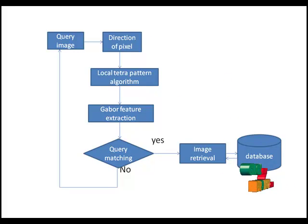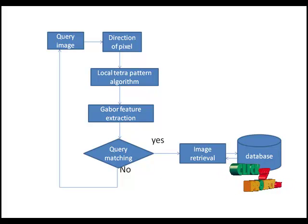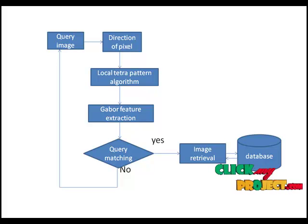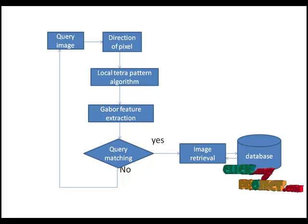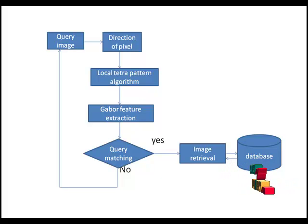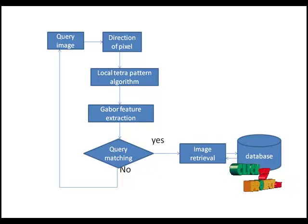This is the flow diagram of our project. In the first step, we give the query image as input. From this input image, we extract the direction of each and every pixel. From these directions, we apply the Local Tetra Pattern algorithm. This pattern algorithm provides direction matching and finally computes the magnitude for each and every direction equivalent. From this, we extract the matched binary magnitudes, and finally these magnitude binary values are given to Gabor feature extraction.